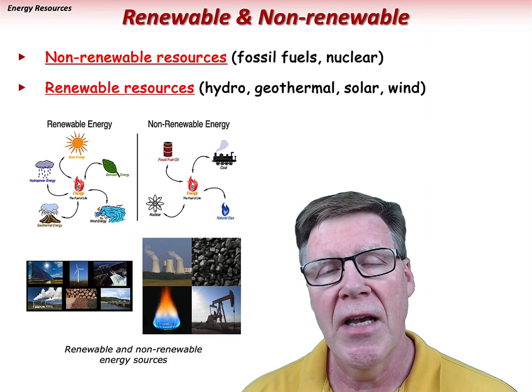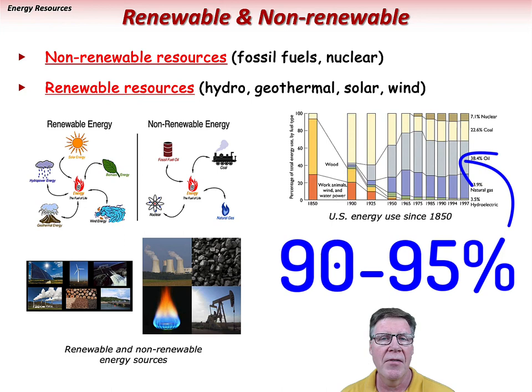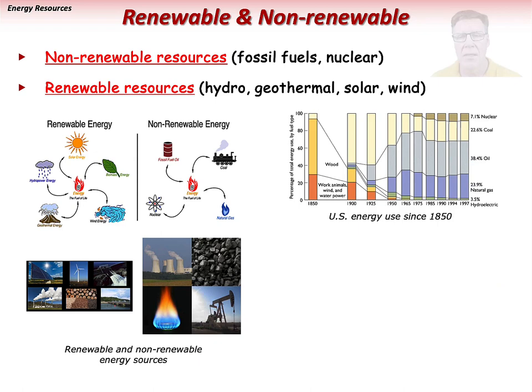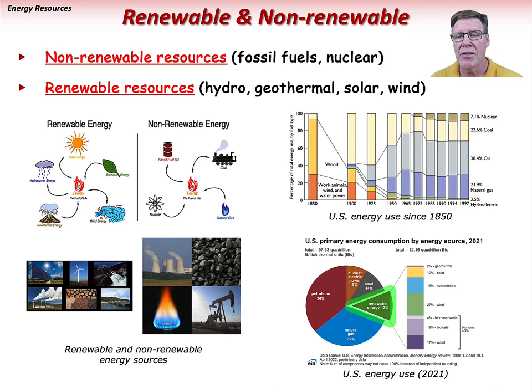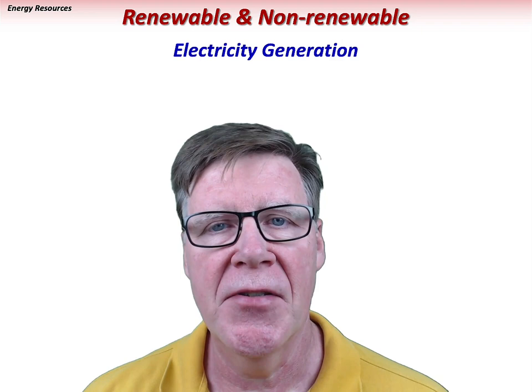Fossil fuels and nuclear power have provided roughly 90 to 95 percent of energy usage in the United States for the second half of the 20th century. However, renewable resources are providing more energy in the 21st century and, as of 2021, account for about 12 percent of U.S. energy use. Electricity in the United States is provided by dominantly non-renewable resources: natural gas, coal, and nuclear power.